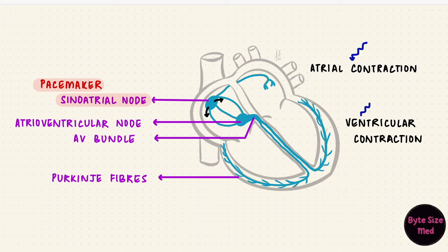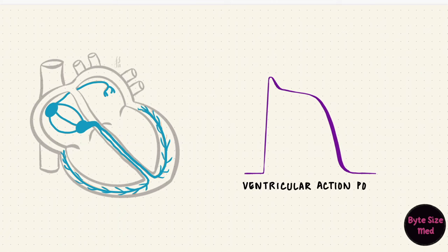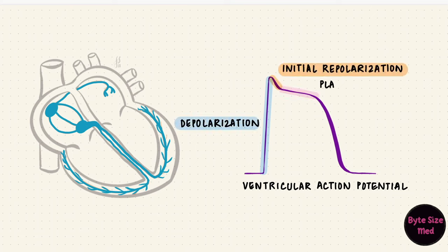The contraction of these chambers follows depolarization of the cells. This is the ventricular action potential. After depolarization, there's initial repolarization of these contractile cells, followed by a plateau, and then final repolarization back to the resting membrane potential.